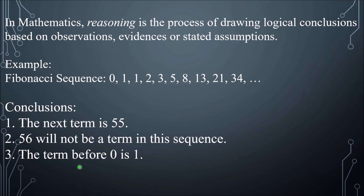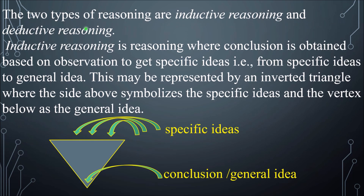Another conclusion is that the term before 0 is 1. Because as you can see, 2 minus 1 is 1, 1 minus 1 is 0, therefore 1 minus 0 is 1. So if we have a term before 0, that is supposedly 1. These are the conclusions taken from the observation. The process of getting conclusions from observation is called reasoning.